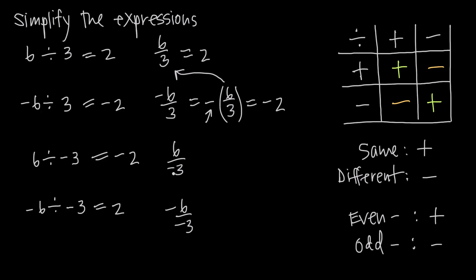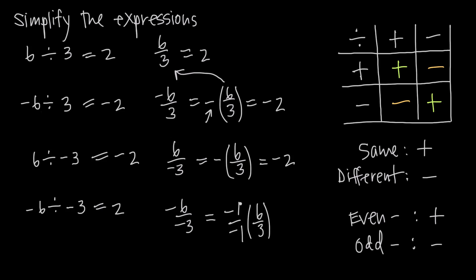We can do the same thing with 6 over negative 3. We can factor out the negative sign from the denominator and pull it out in front. 6 over 3 is 2, and applying the negative sign, we get negative 2. Or in the case of negative 6 over negative 3, pulling both negative signs out in front, we end up with negative 1 over negative 1 times 6 over 3. Negative 1 divided by negative 1 is going to be positive 1 because the two negative signs cancel. So we have 1 times 6 thirds, or just 6 thirds, which we know is 2.